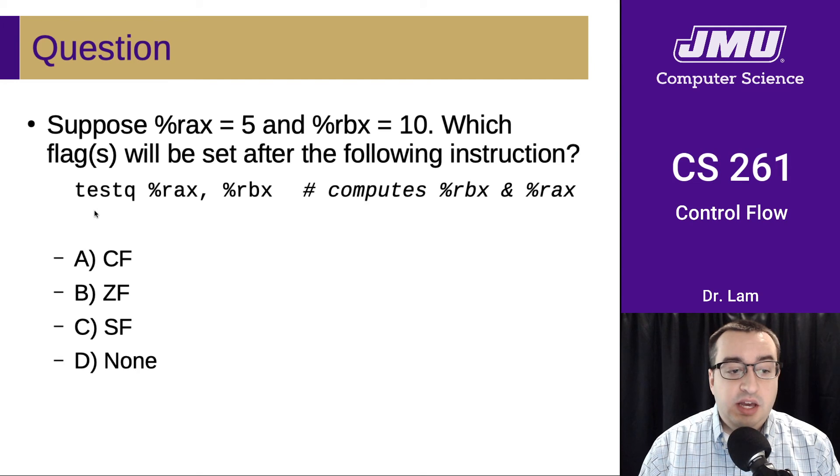And then finally, test RAX and RBX. Take a minute and see if you can figure out which flags are going to be set there. We said that the test instruction always sets the carry flag to zero. And then for the other ones, you may need to think about what these are in binary. So 5 is 101 in binary, and 10 is 1010 in binary. If you line those up and you do the binary AND, you'll find that the result is actually zero. So the zero flag will be set, but the sign flag will not be set.